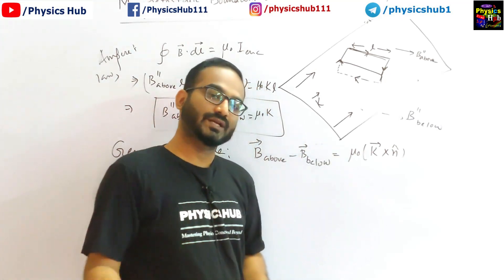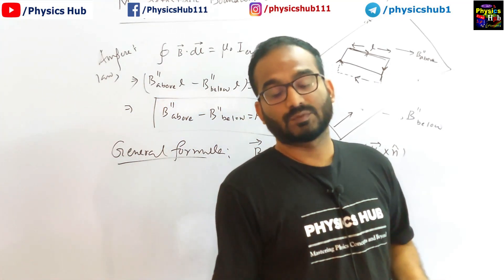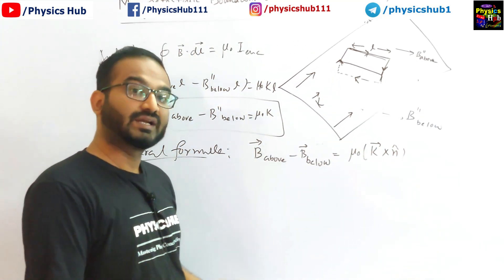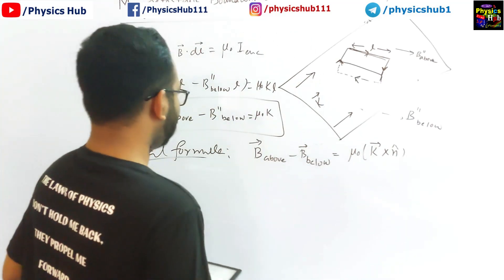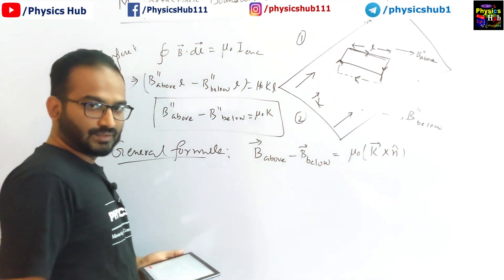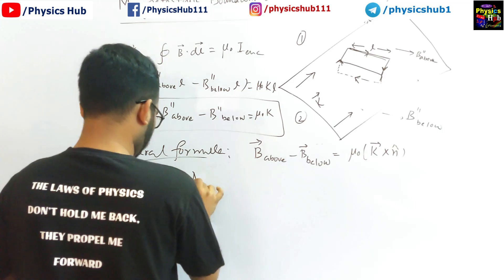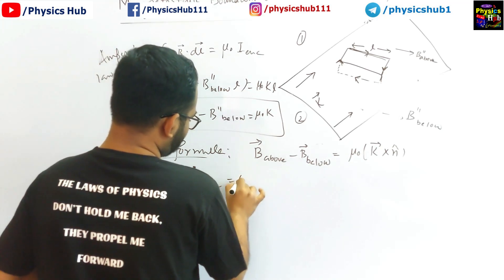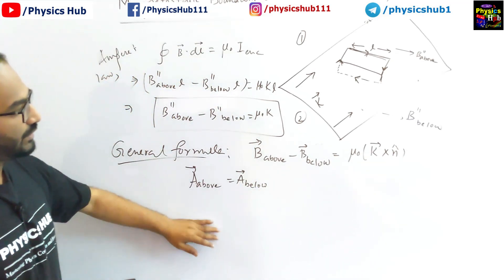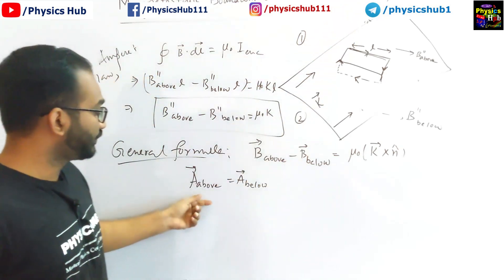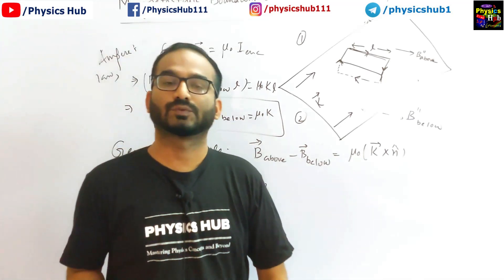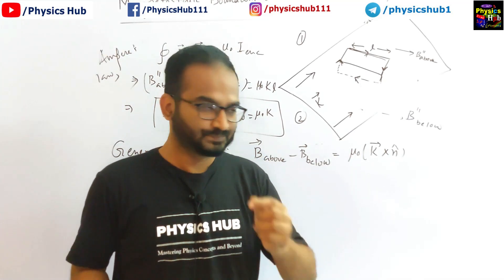Just as in electrostatics we talk about the scalar potential V, in magnetostatics the analogous quantity is the magnetic vector potential A. For a surface separating two media, the vector potential is found to be equal on both sides: A_above equals A_below. This means the magnetic vector potential is continuous across the surface — both its normal and tangential components are continuous.